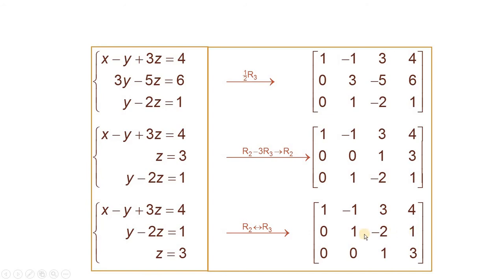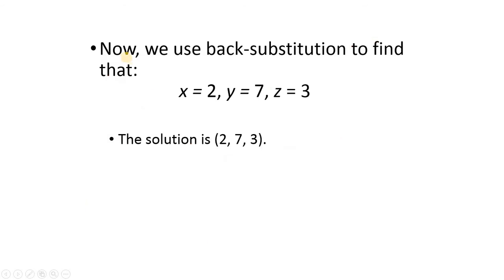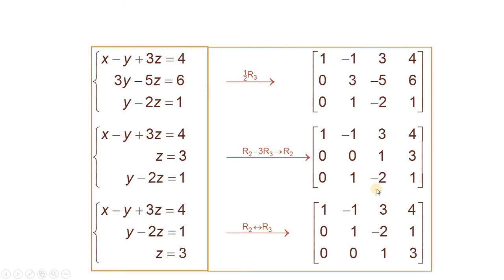From the second row, we have y minus 3 is equal to 1. From the first row, we have x minus y plus 3 is equal to 4. If we put z equal to 3 here, we get the value of y, and if we put the values of y and z here, we get the value of x. Using back substitution, the values are: x, y, z. The solution set is (2, 7, 3) — this is the value of x, this is the value of y, this is the value of z.